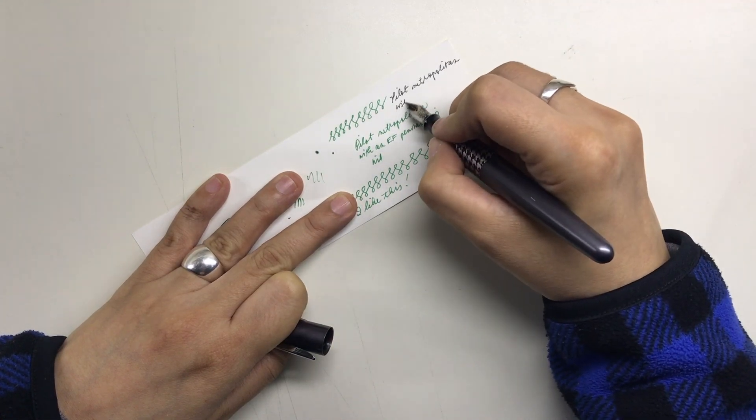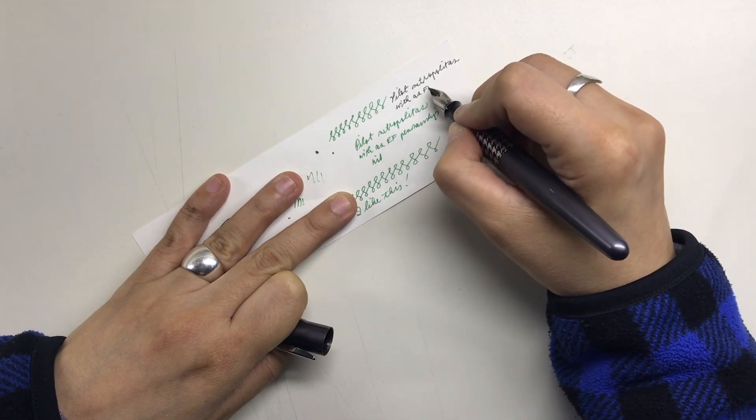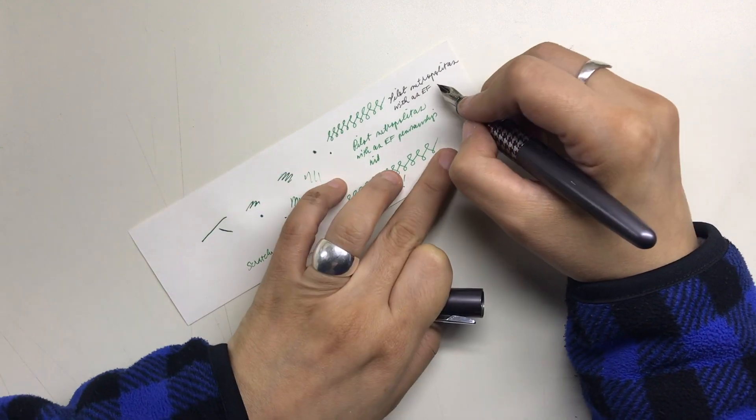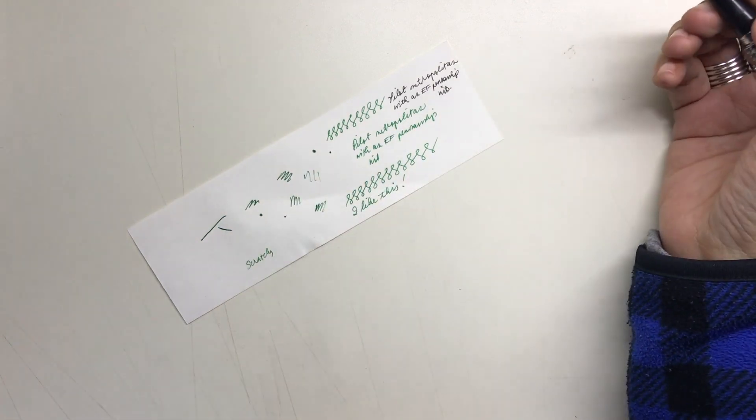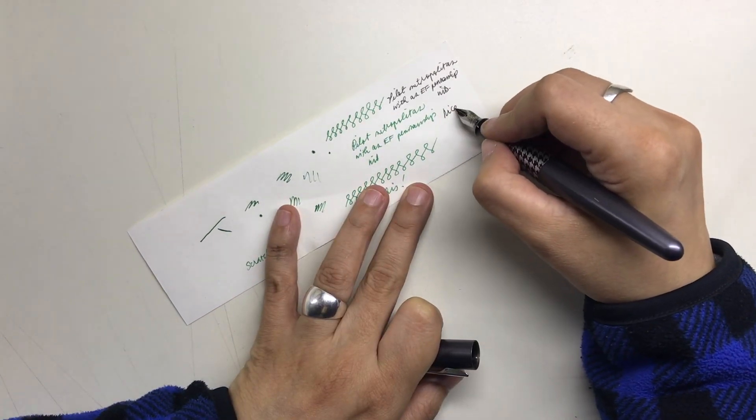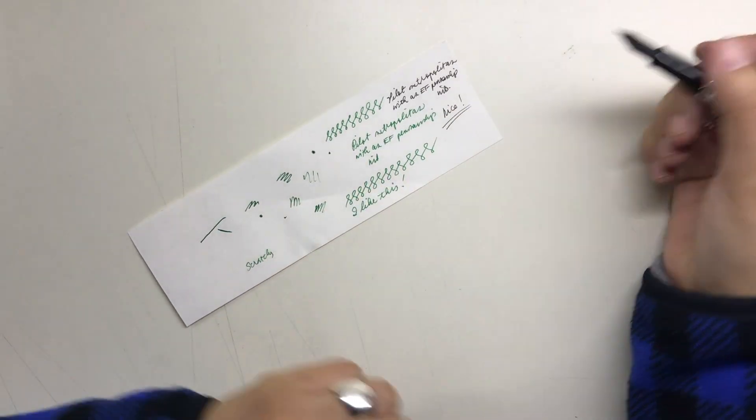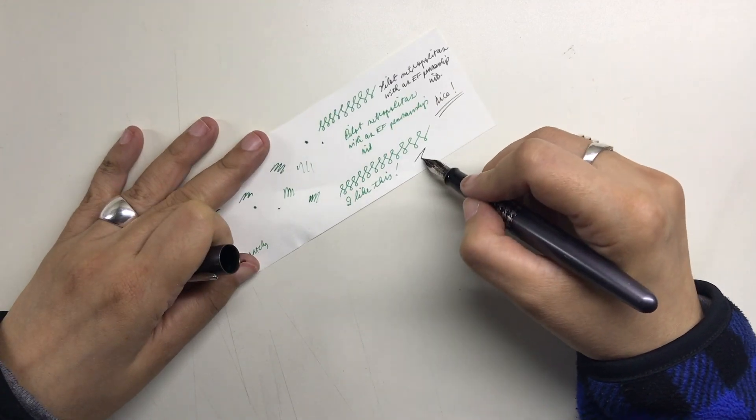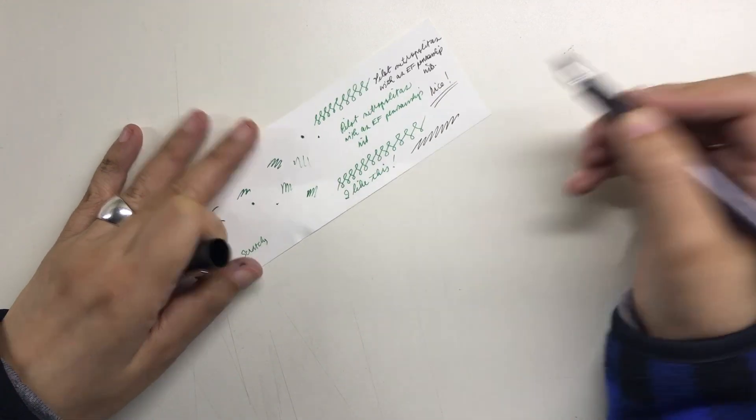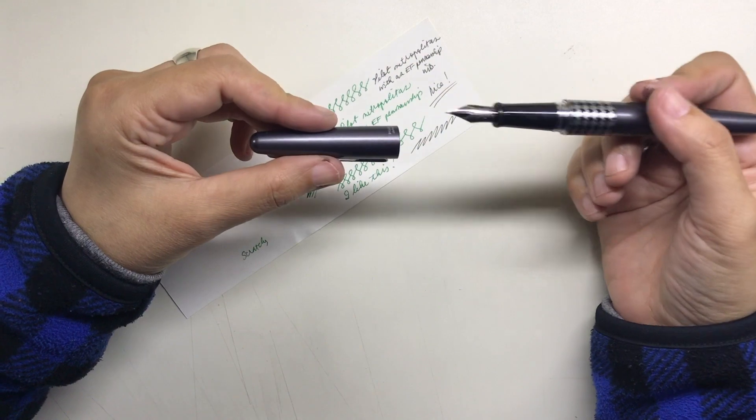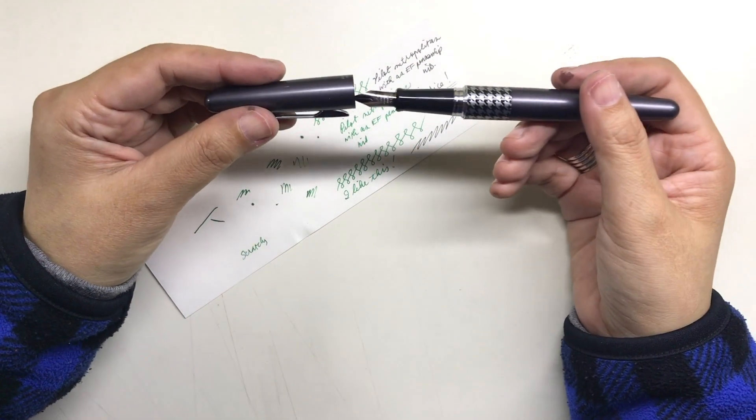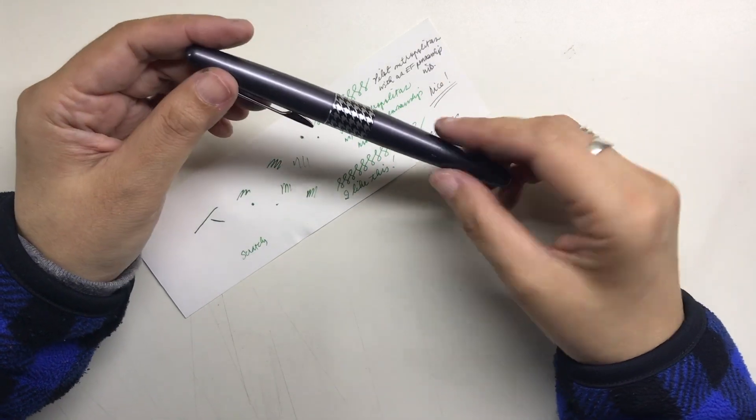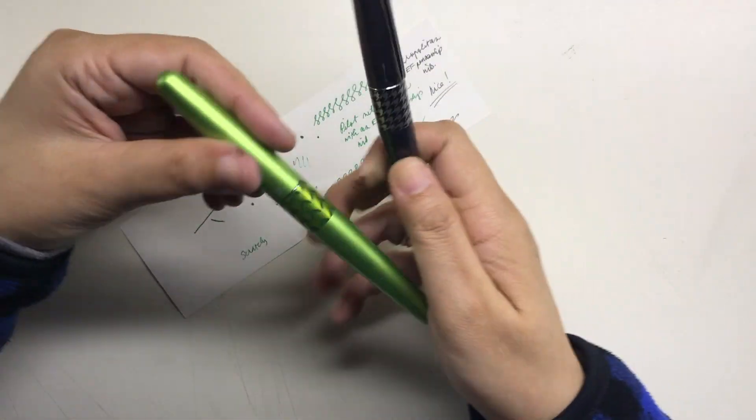And there is a teeny tiny amount of tooth or feedback in both, which is to be expected from an extra fine nib. All in all I am happy with this nib swap. These pens will work even better with my planner because these are the two pens that I write the most and longest information with on my planner pages. So I am hoping that having an extra fine nib will allow me to write more legibly even when I'm writing small and even when I'm in a hurry.